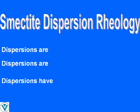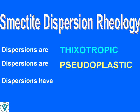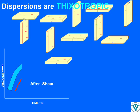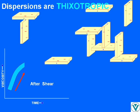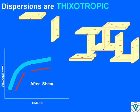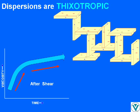Three characteristics of a smectite clay dispersion in water define its rheology. Dispersions are thixotropic. Dispersions are pseudoplastic. Dispersions have yield value. After the clay is hydrated, the three-dimensional house of cards colloidal structure builds rapidly at first, giving a quick increase in viscosity. As time passes, the remaining free platelets take a longer time to find an available site in the structure, so viscosity increases at a progressively slower rate.